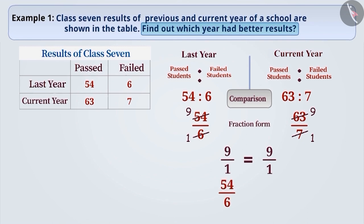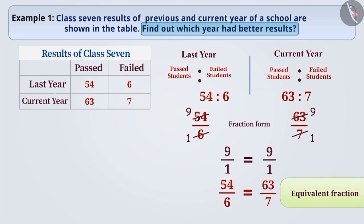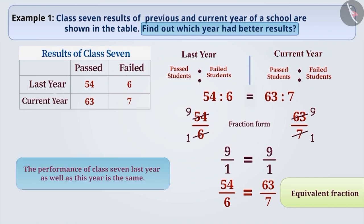So 54 by 6 is equal to 63 by 7. That is, both the fractions are equivalent fractions. 54 is to 6 is equal to 63 is to 7. Therefore, the performance of class 7 last year and this year is the same.